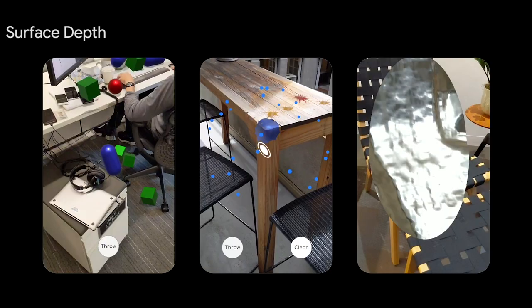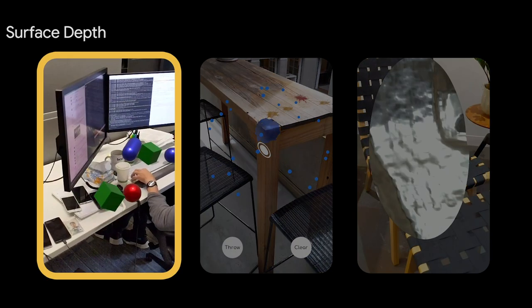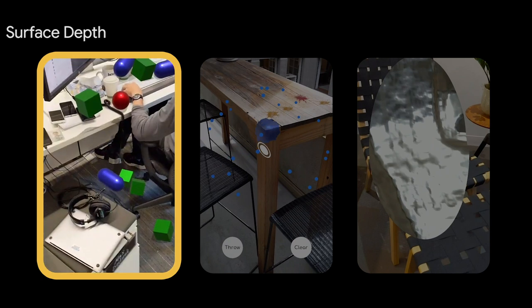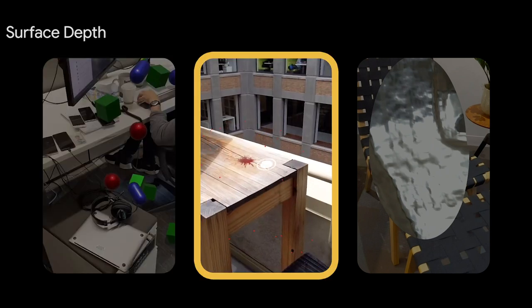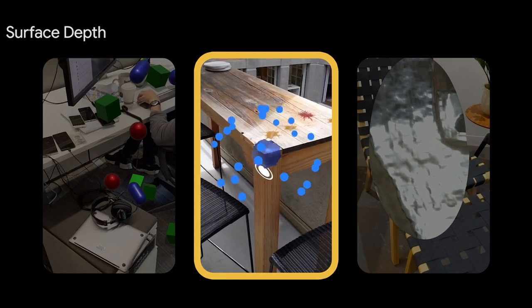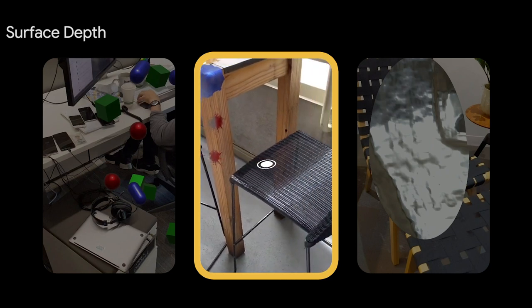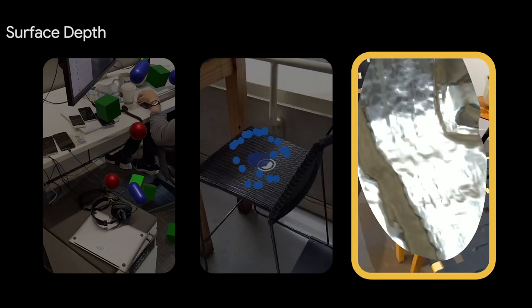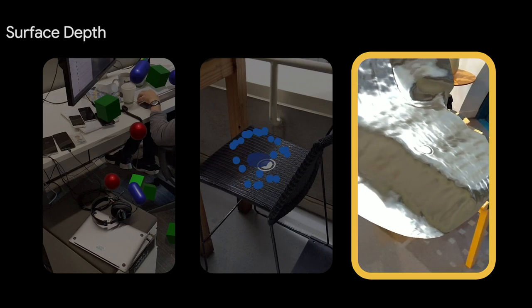Surface Depth leverages the CPU or compute shaders on the GPU to create and update depth meshes in real-time, thus enabling collision, physics, and geometry-aware shadows, throwing paintballs, and making texture decals, and touching your phone screen to freeze a textured mesh of the world.